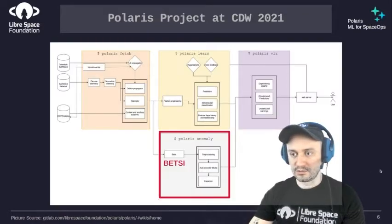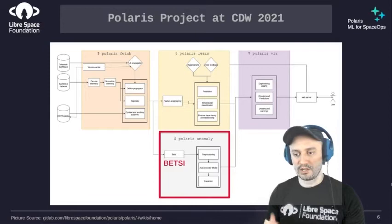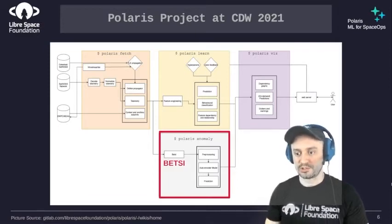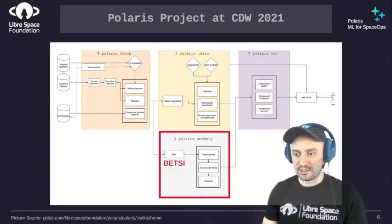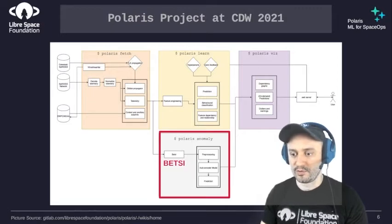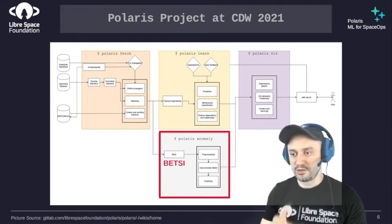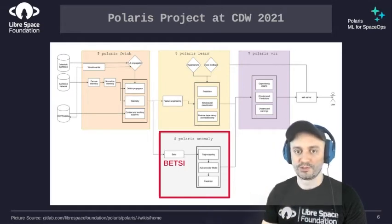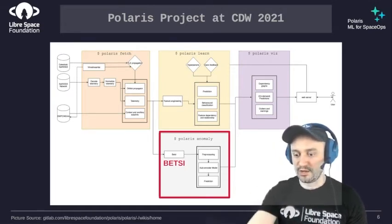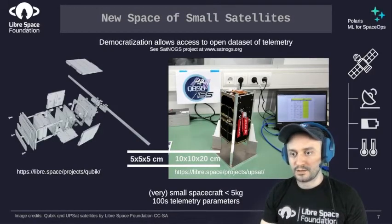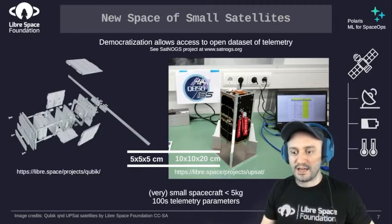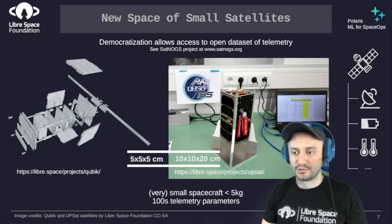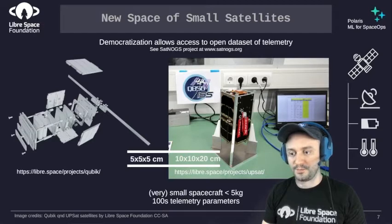Our goal this year is to develop an anomaly detection module called Betsy. We integrated it into the pipeline via a subcomponent we call Polaris Anomaly — this is work in progress. The goal is to generate more anomaly reports which would be valuable for the operation teams. There's a new space for small satellites, and we feel an open source Python tool is useful for this community.